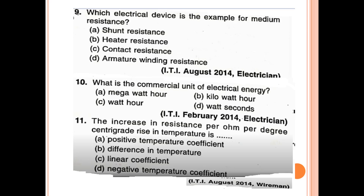Which electrical device is the example for medium resistance? Options are: shunt resistance, heat resistance, contact resistance, armature winding resistance. The answer is heat resistance.